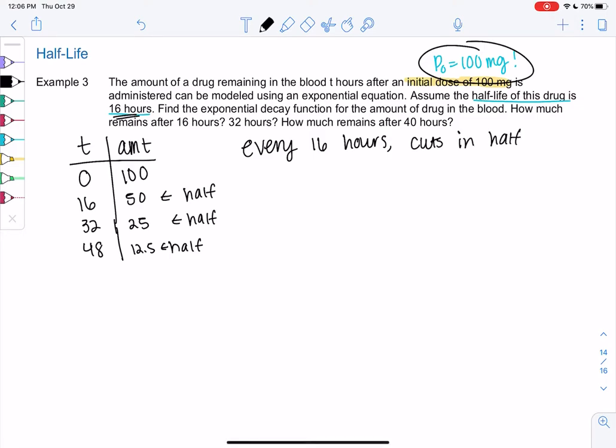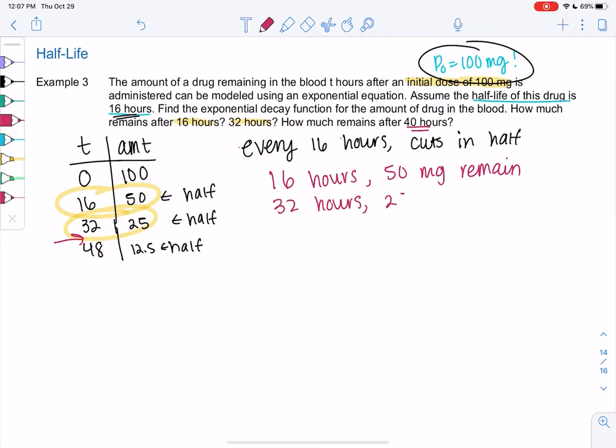So we've actually already answered two parts of this question. 16 hours, we have 50 milligrams. 32 hours, we have 25 milligrams. So we can do those two without even finding the equation. 40 hours doesn't quite fit the pattern, so we'll need the equation for 40 hours, because that would be somewhere in between 32 and 48. So 16 hours, 50 milligrams remain. And then 32 hours, 25 milligrams remain.